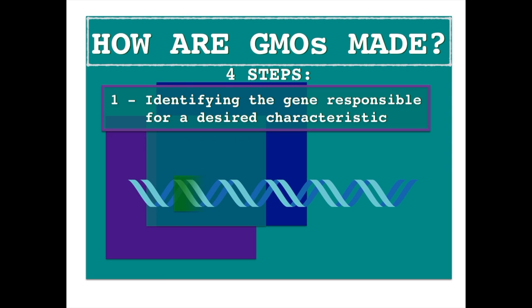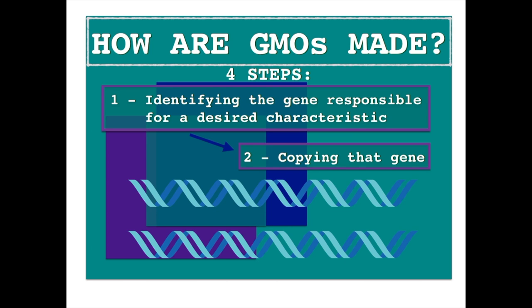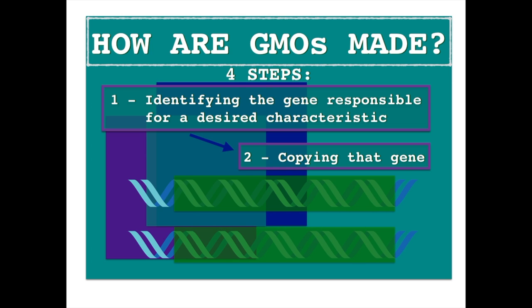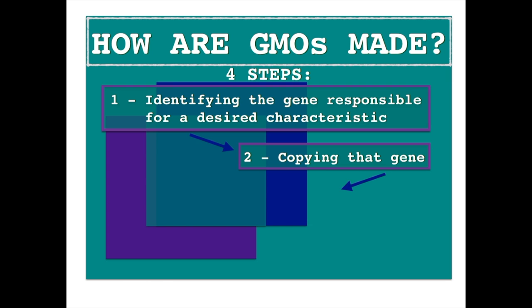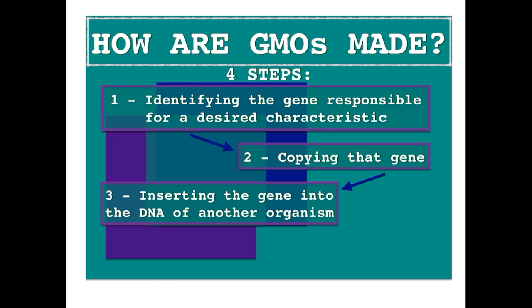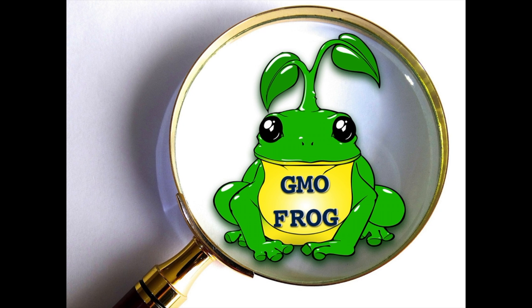The steps to create GMOs are: first, we have to identify the gene responsible for the desired characteristic. Then we copy that gene and insert it into another organism, which then becomes a GMO. We allow it to grow in suitable conditions — and the result is much less dramatic than a plant frog.